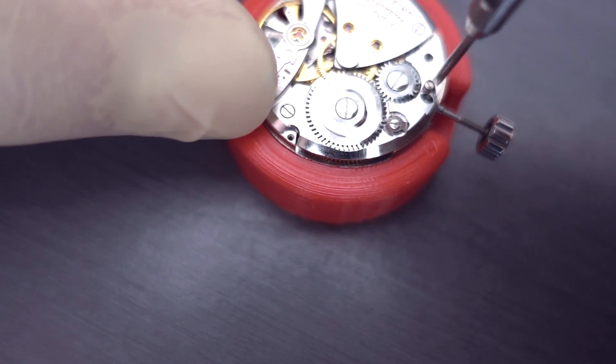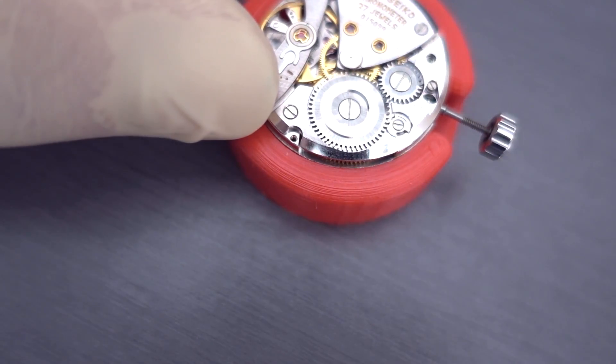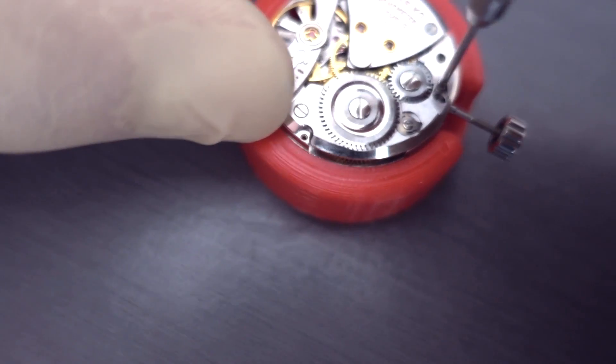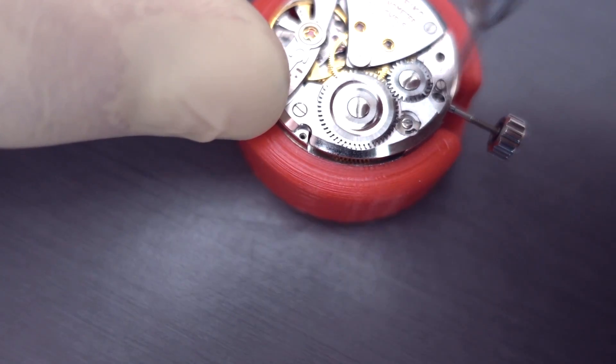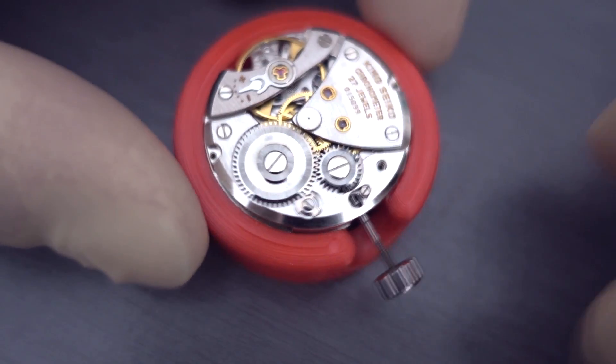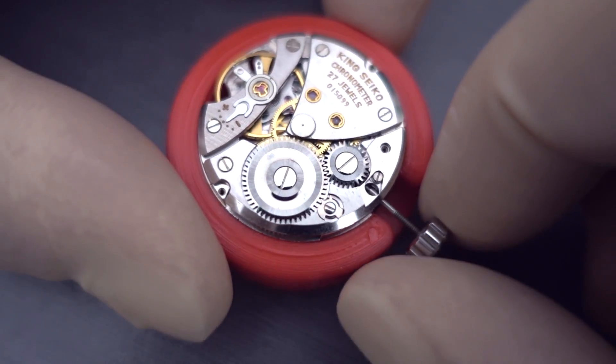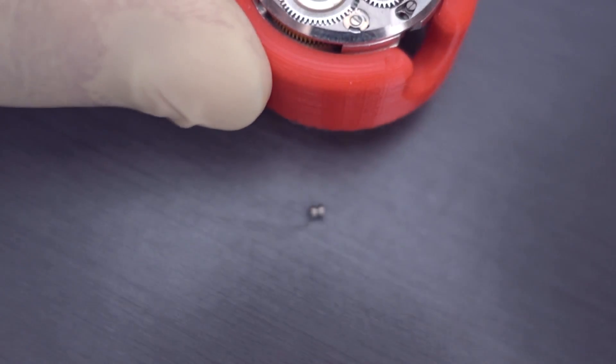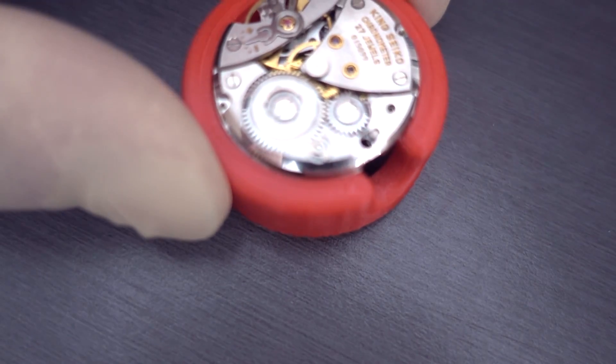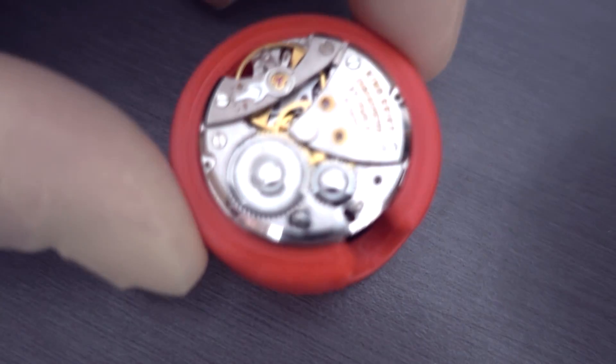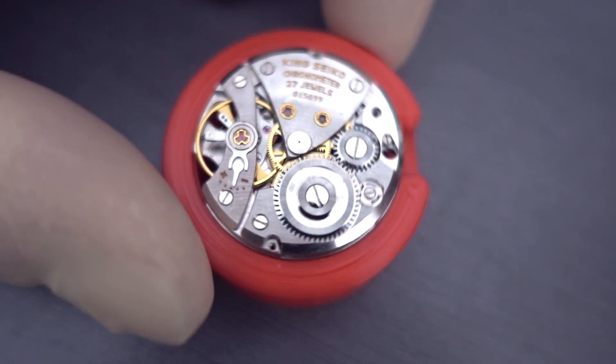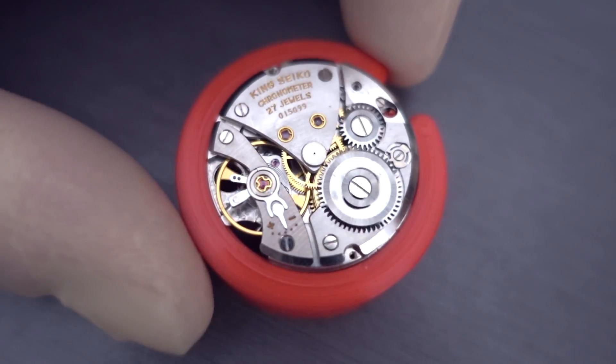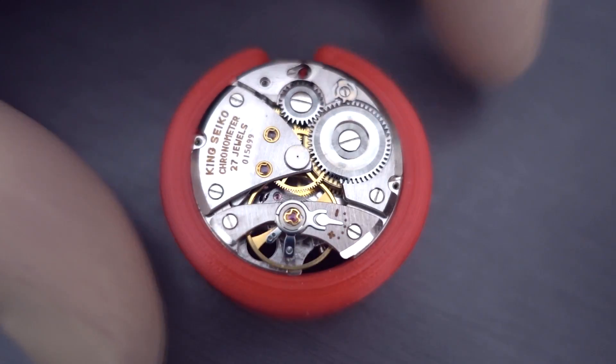And I'm just trying to loosen off the set lever screw there. And in this case that actually broke. So I don't know if it's obvious there, but you can turn that all day and it'll keep turning. And I had to find a replacement for that. These are actually a little bit tricky to work on with the keyless works because they're quite integrated. So they're actually fairly difficult to take off.